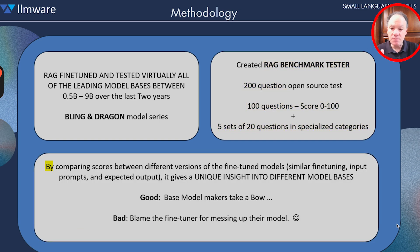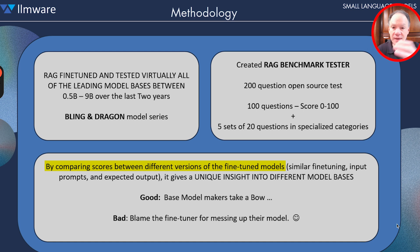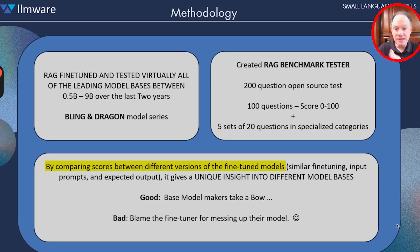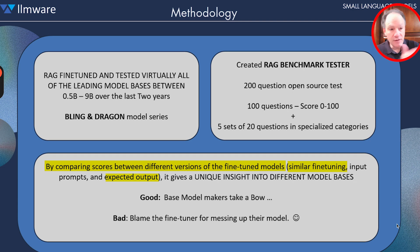What we're going to try to do is compare scores between different versions of fine-tuned models. Very similar principles in the fine-tuning — there are some adjustments and improvements we continue to make to our underlying dataset and training parameters — but for the most part, each of these models has a very similar fine-tuning, designed with a simple set of prompt wrappers and templates and very similar kinds of expected outputs. Comparing performance across these different models gives a really unique insight into the different model bases.